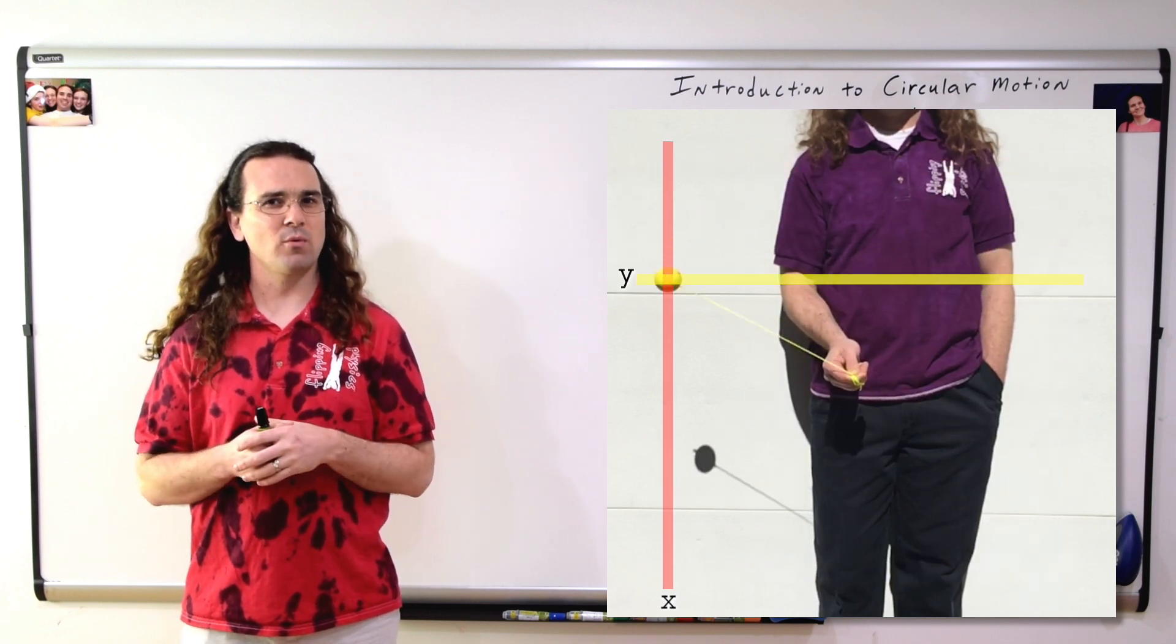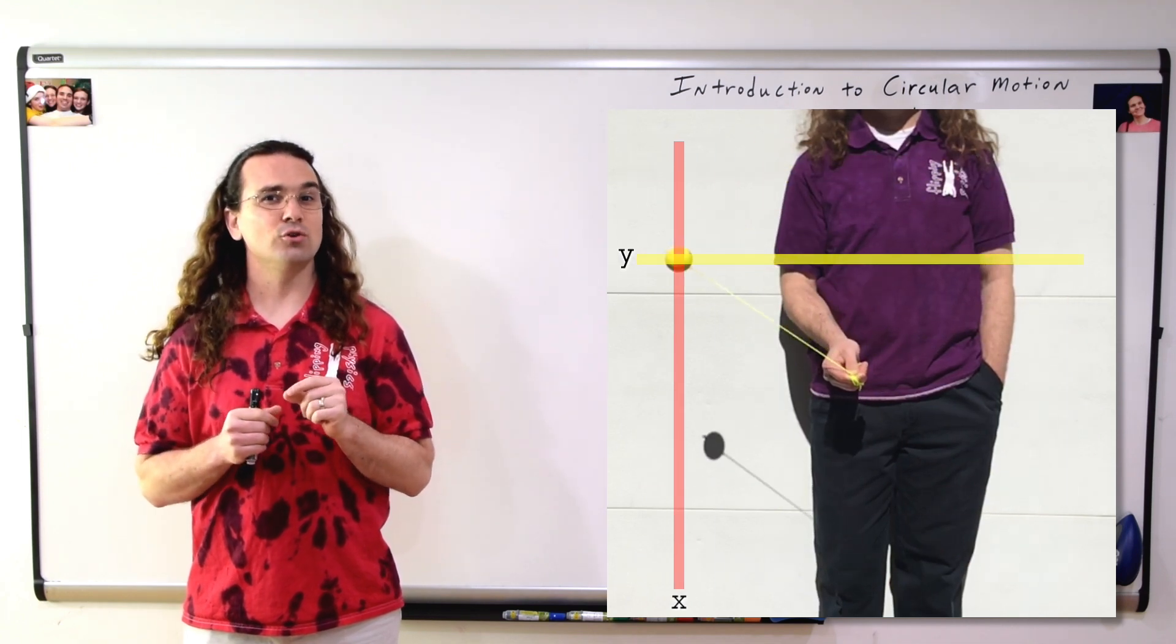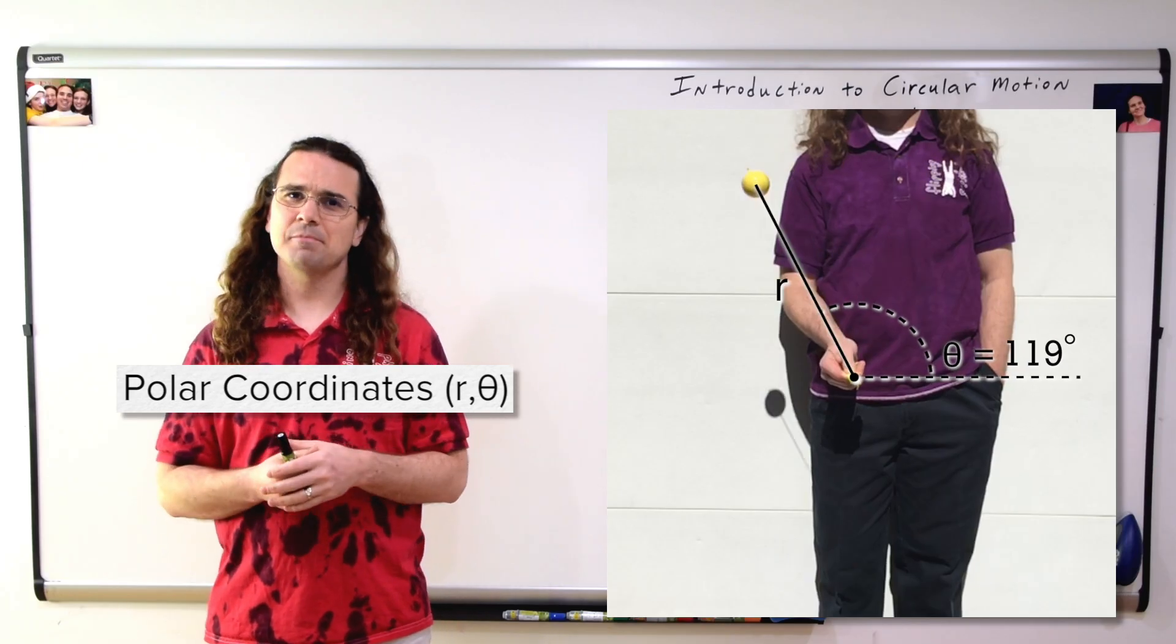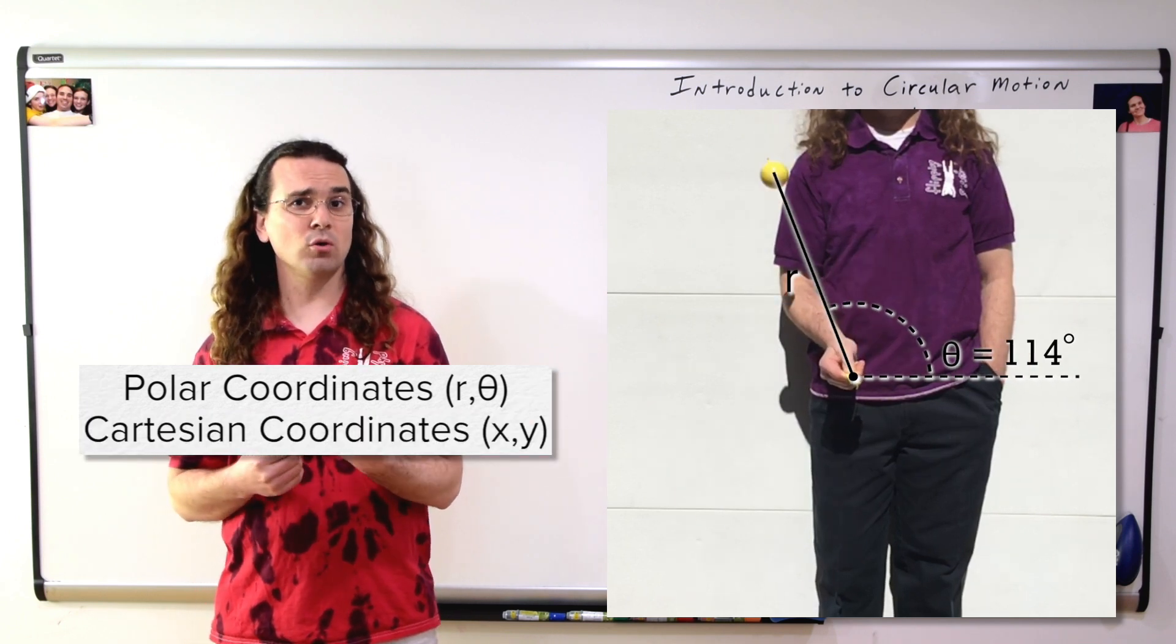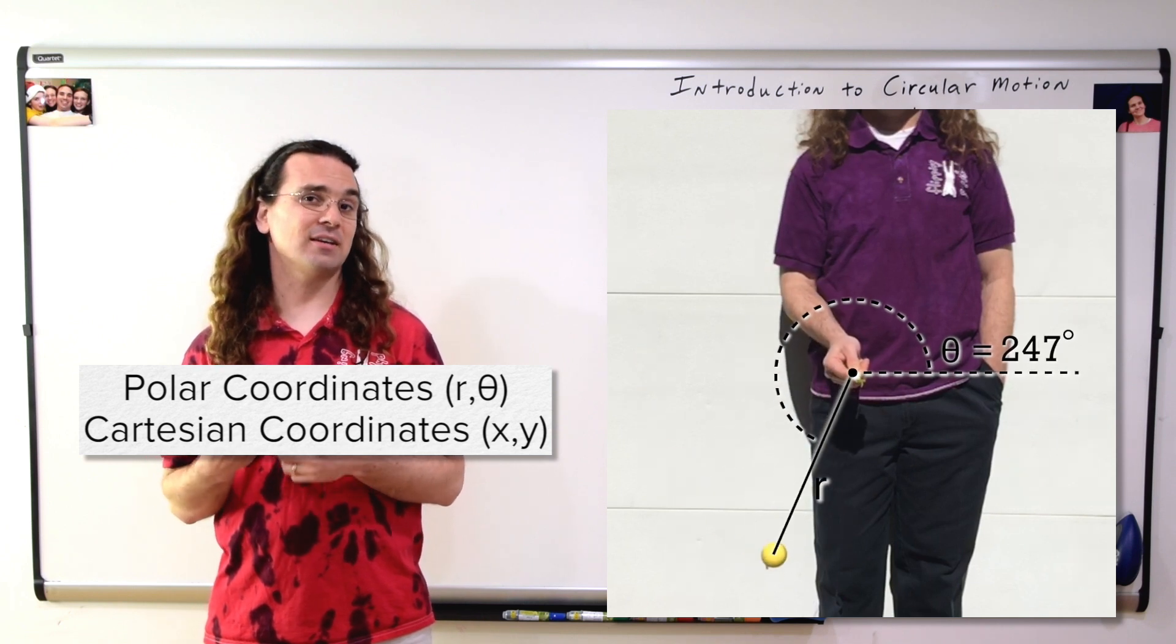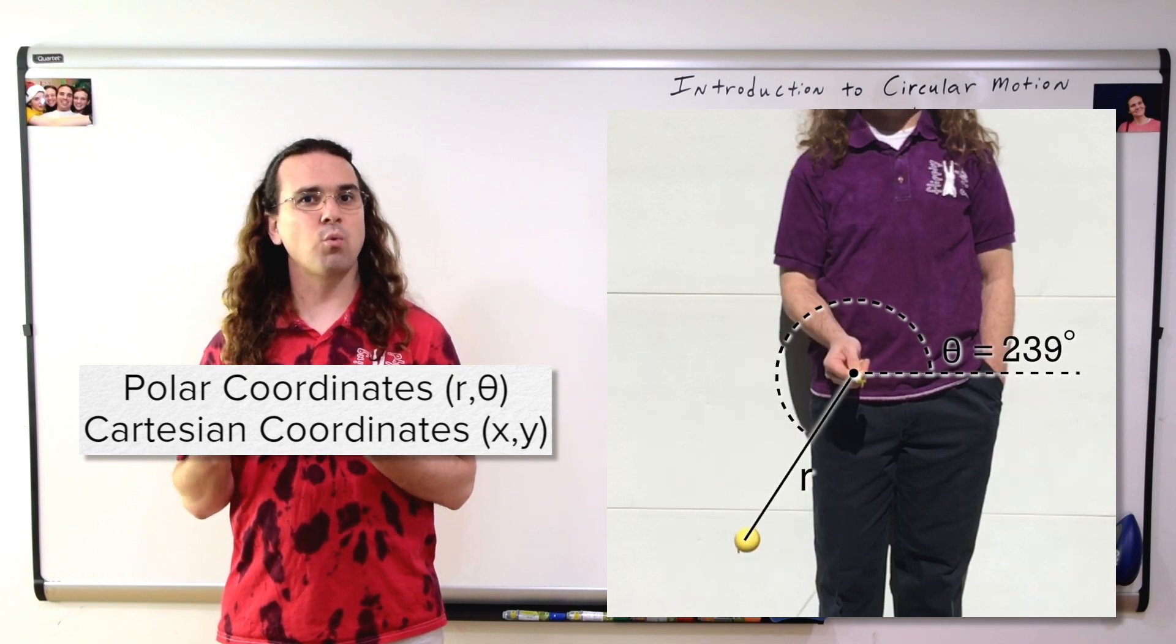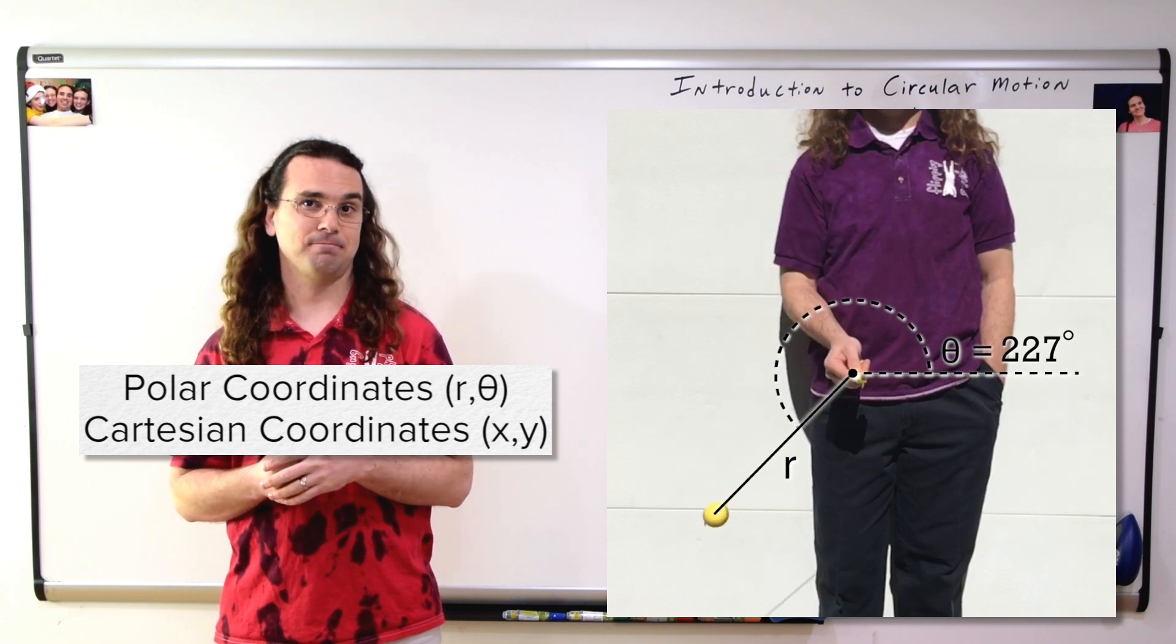This makes it more complicated to work with so typically in physics we will describe the location of an object moving along an arc using the radius and the angular position. That would be using polar coordinates, right Mr. P? Correct Bobby. Rather than using the Cartesian coordinates x and y, we can use the polar coordinates r and theta. And notice, when the sphere is moving in a circle, how the angle theta changes, however, the radius stays constant. So, only one variable changes when we describe the sphere's location using the radius and theta.